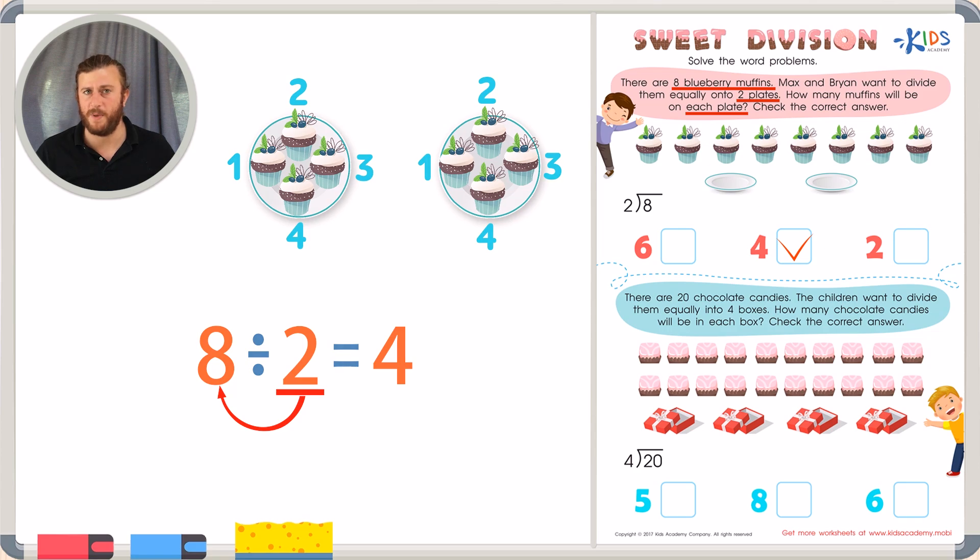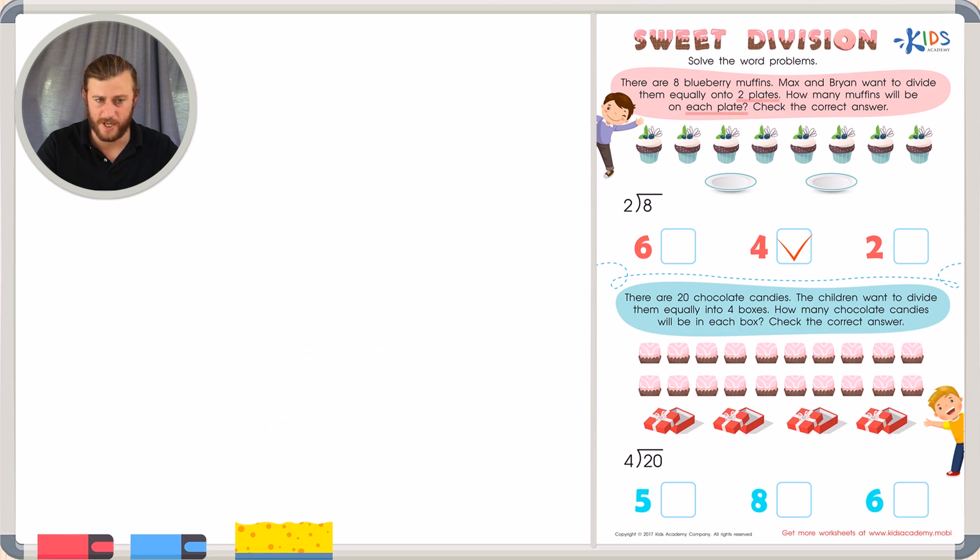Let's take a look at the second problem and use those same two strategies. Remember, we're going to be underlining all the important information in the second question too. In the second question, it reads, there are twenty chocolate candies. So I'm going to underline that because that seems important.